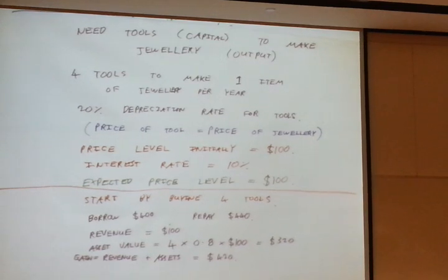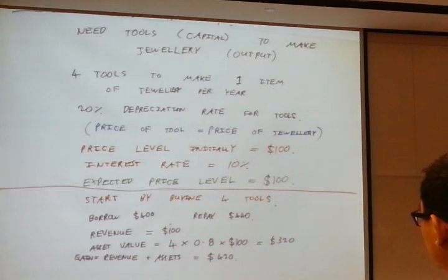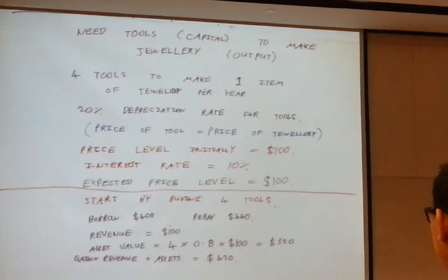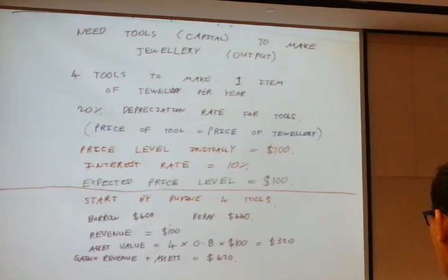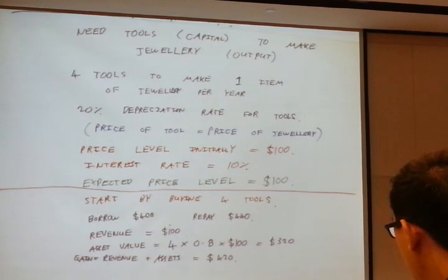So revenue plus assets is what? That's what you gain. That's four hundred dollars. So would you take a loan? No, you wouldn't take a loan at ten percent under these circumstances. What's the highest interest rate you should take from the loan? Five percent.